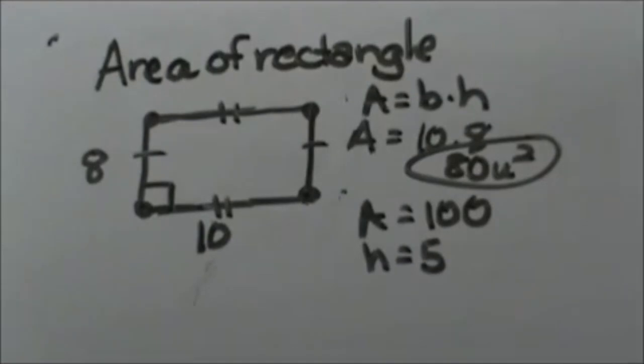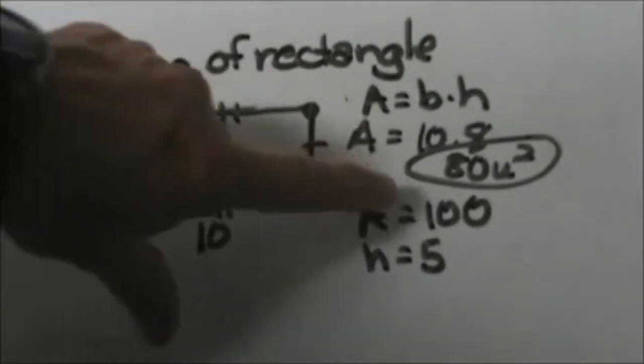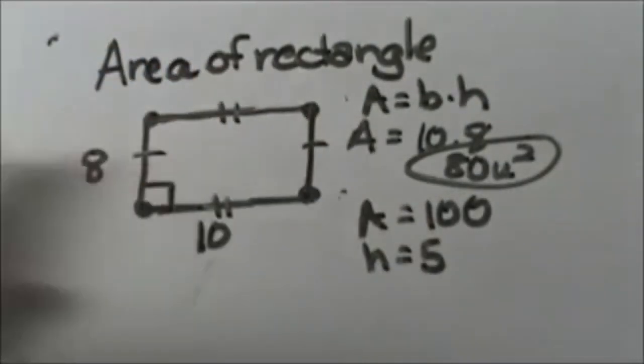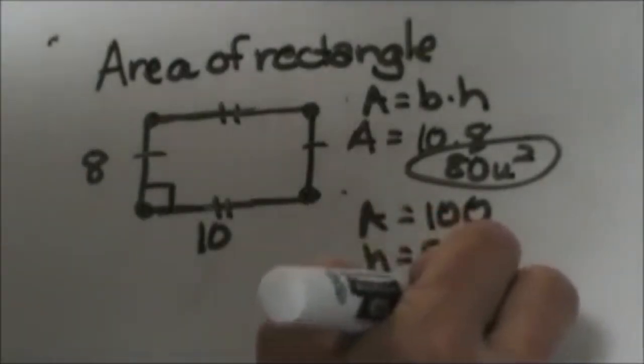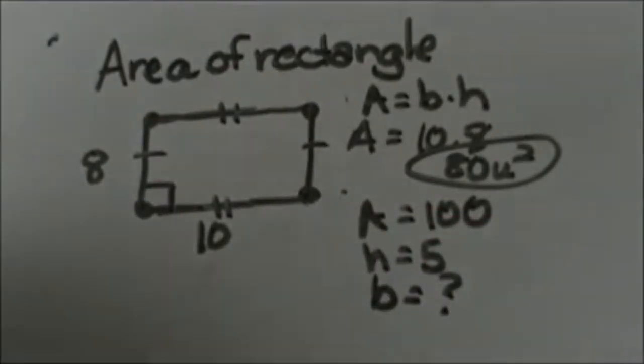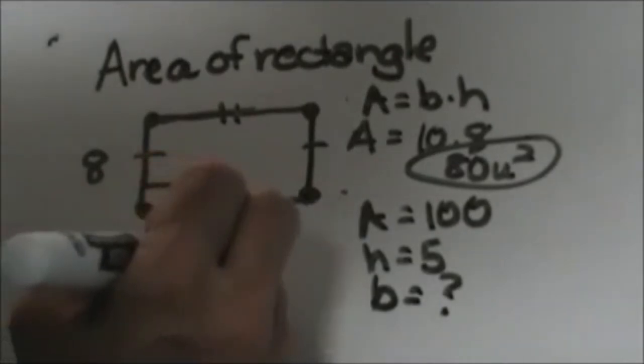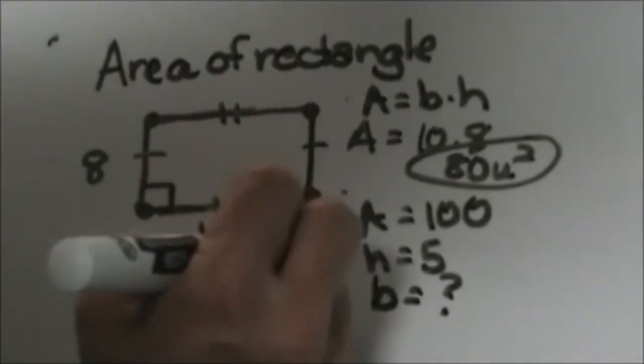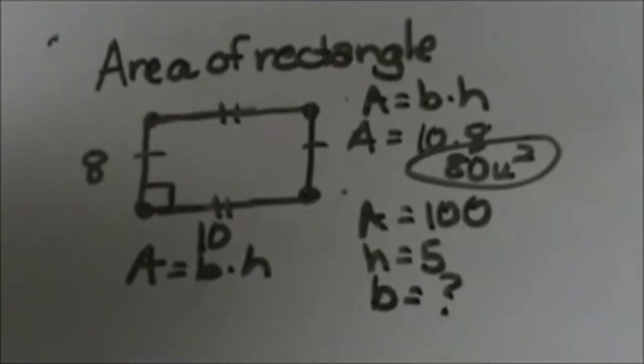But what happens if you have to work backwards and you're given an area and the height and you don't know what the base is? What you're going to do is write down your formula. Area equals b times h. You're going to plug in what you do know.